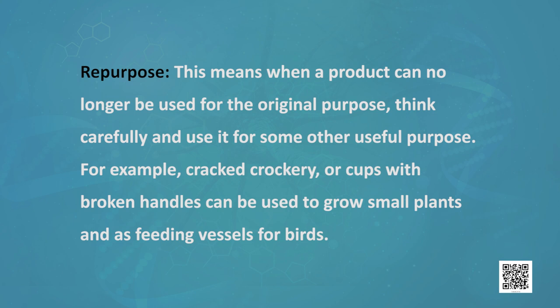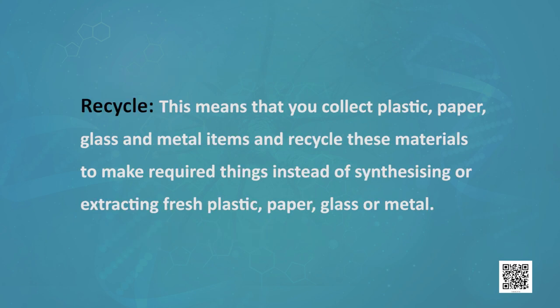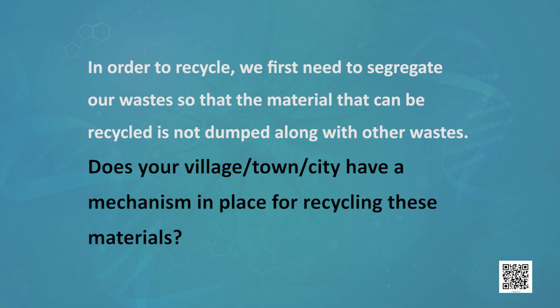Repurpose means when a product can no longer be used for its original purpose, think carefully and use it for some other useful purpose. For example, crockery or cups with broken handles can be used to grow small plants or as feeding vessels for birds. Next is Recycle — collect waste plastic, paper, glass and metal items and recycle these materials to make required things instead of synthesizing or extracting fresh raw materials. To recycle, we first need to segregate our waste so that recyclable material is not dumped along with other waste.